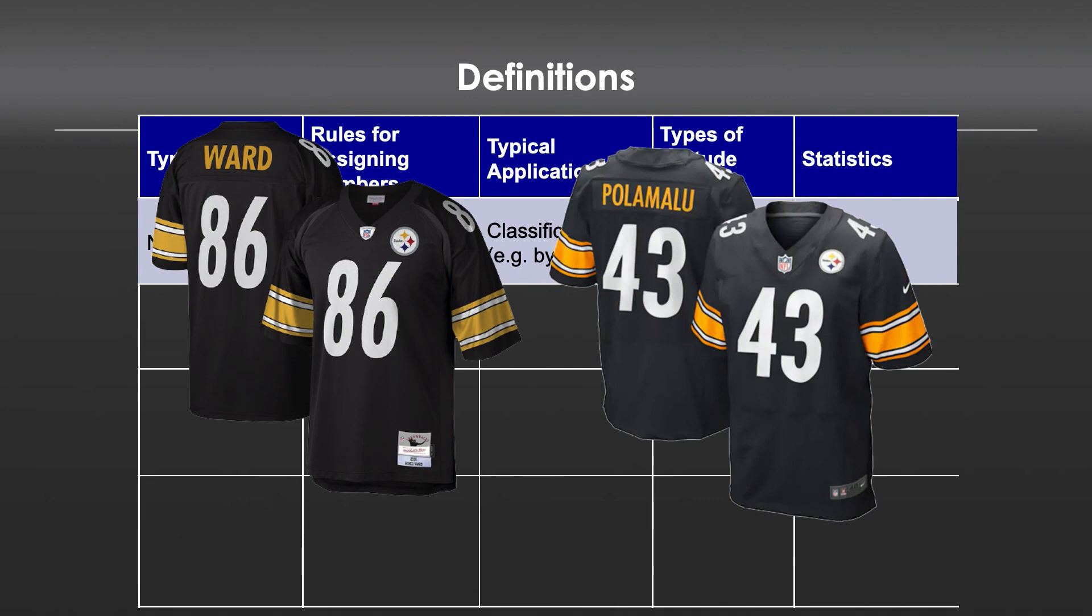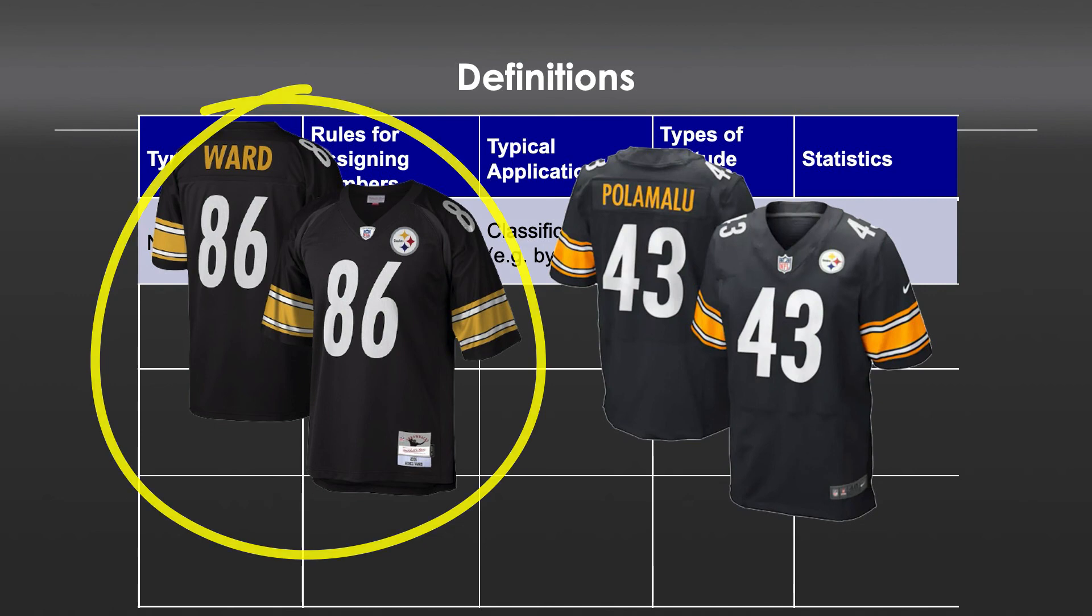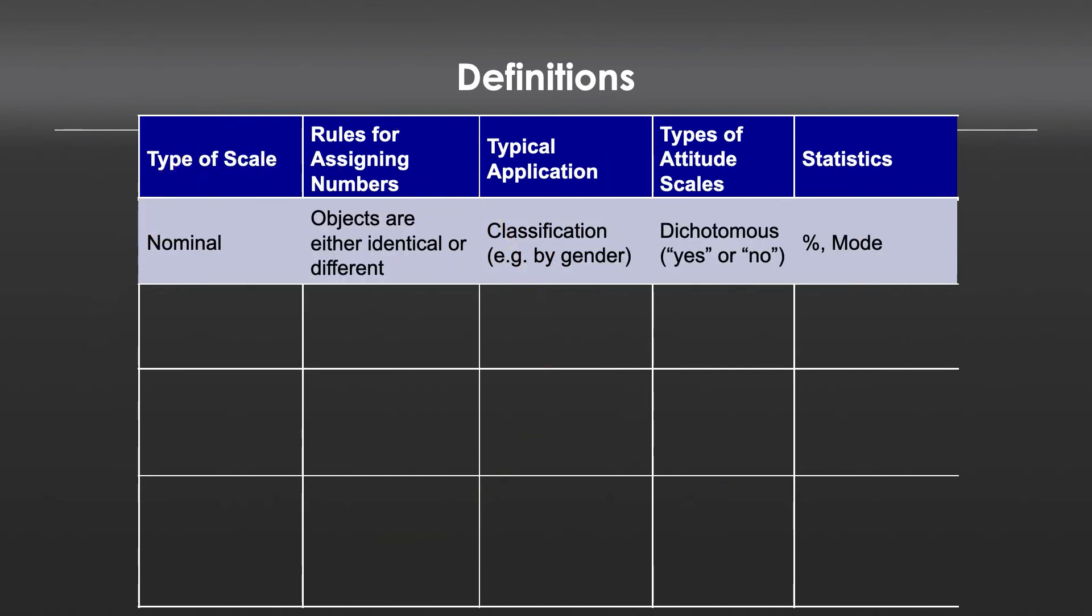So for instance, you can state which of these two you prefer. Do you prefer the Steelers player Ward or Palomalo? You're not saying how much more you prefer one over the other, simply stating a fact like I prefer Heinz Ward as my option of these two. Another typical example of an ordinal scale might be something like gender. You might say, I am male. That is a description. One is not better than the other, male is not more or less than female, it's simply different.